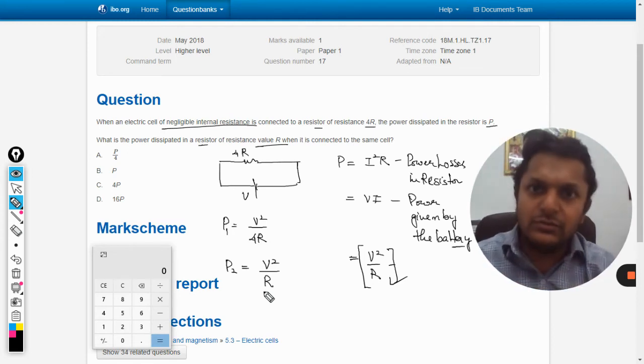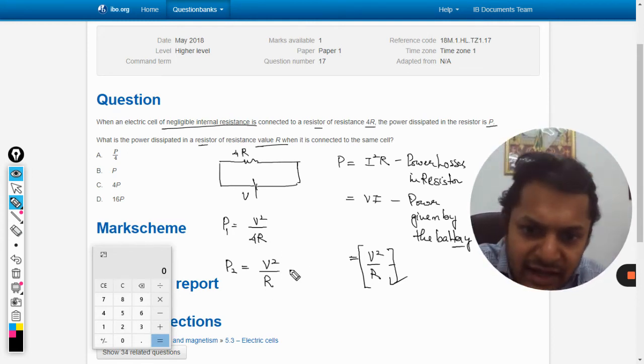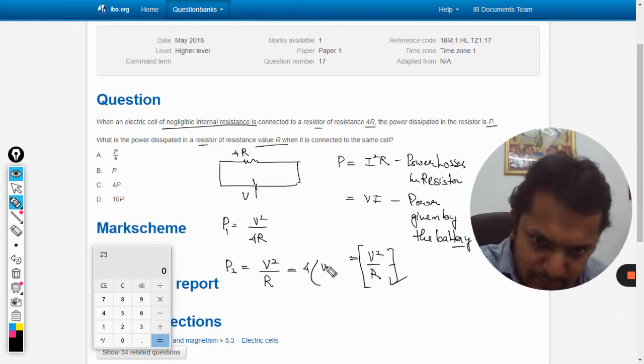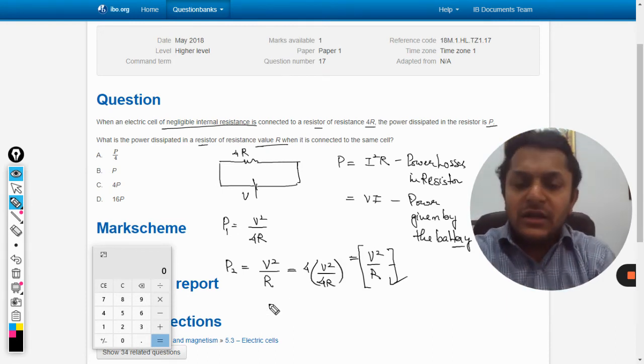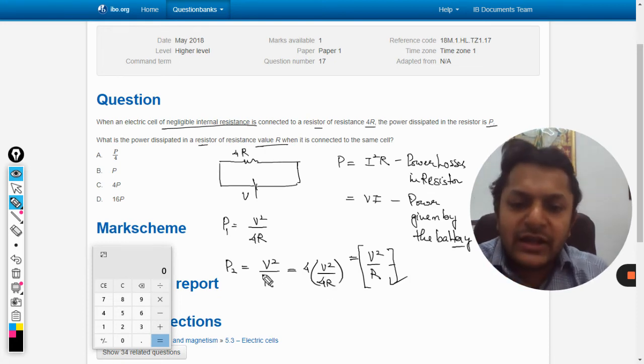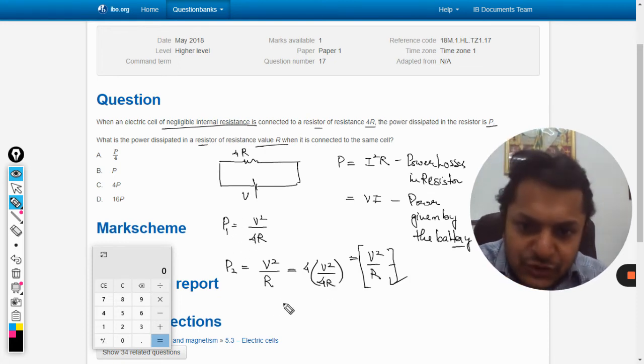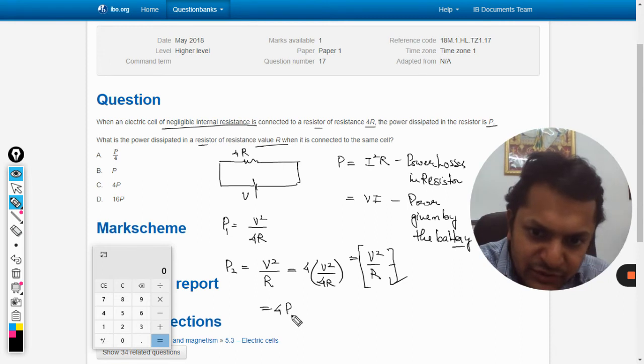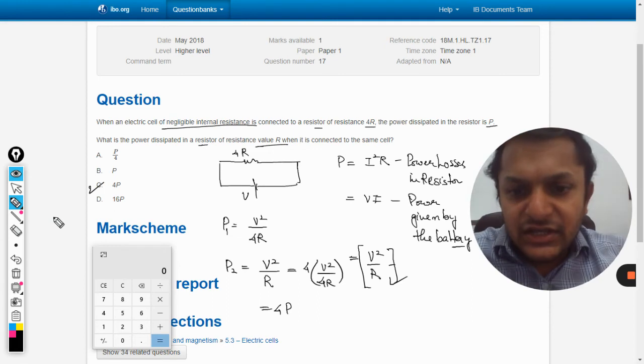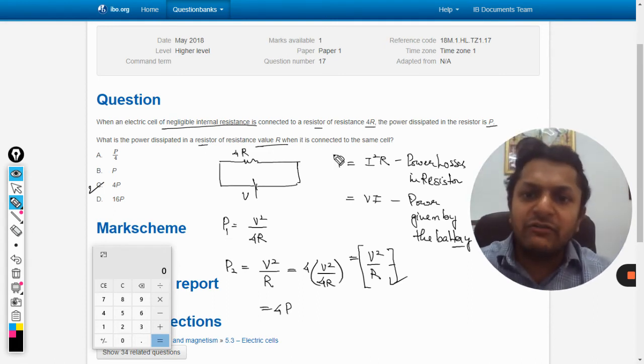Here I can say, multiplying by 4, V²/4R can be substituted as P1, so it becomes 4P. Your answer should come to be C. C is your answer. The new power that will be consumed will be four times.